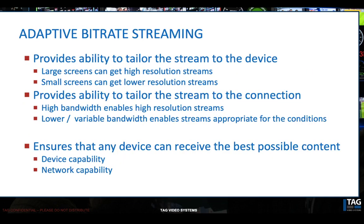Adaptive bitrate streaming provides the ability to tailor the stream to the end device. Large screens get high-resolution streams, small screens get lower-resolution streams — we optimize bandwidth and don't waste it. There's no point sending a 4K picture to your phone; your phone would just have to downscale it using energy and compute cycles. We can also tailor the stream to the connection: if high bandwidth is available, high-resolution streams are enabled; if bandwidth is lower or variable, appropriate streams are selected. Any device can receive the best possible content given the device capability and network conditions at a given moment. Nowadays bandwidth to the home is pretty good, but you can still experience bandwidth reductions on a congested cell network — and that's where OTT begins to pay off.